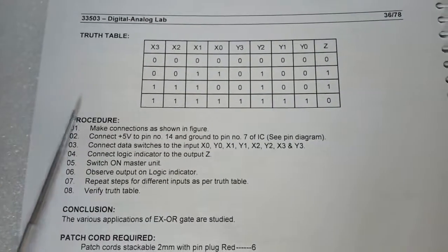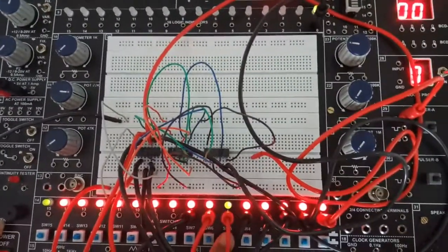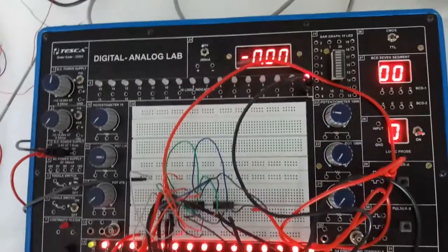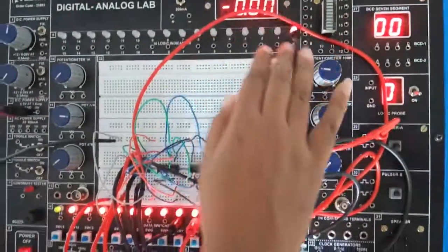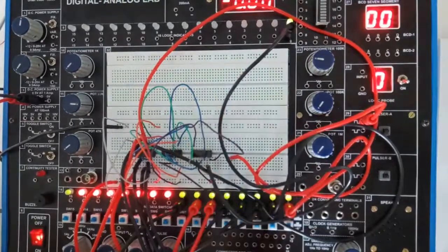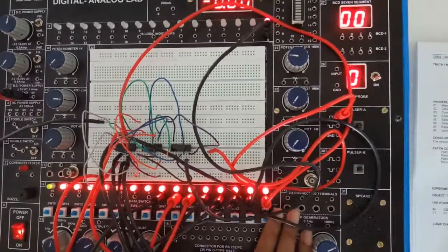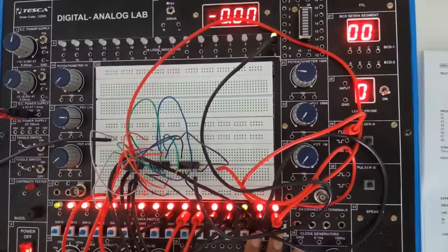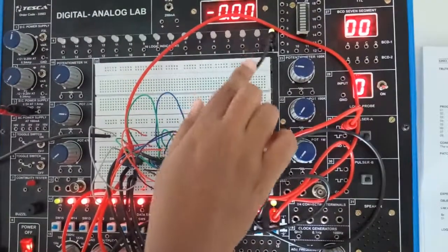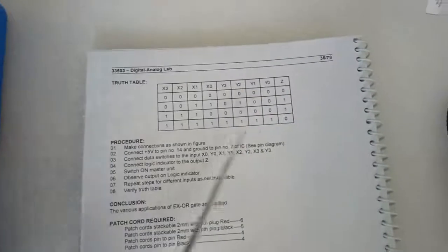We will verify the truth table. When all inputs are 0, output Z is also 0. As I give 1 to all inputs, output Z is also 1. When giving X1=1, X0=1, Y2=1, the output is also 1. Like this you can verify the rest of the truth table.